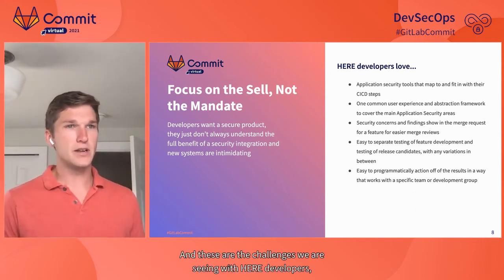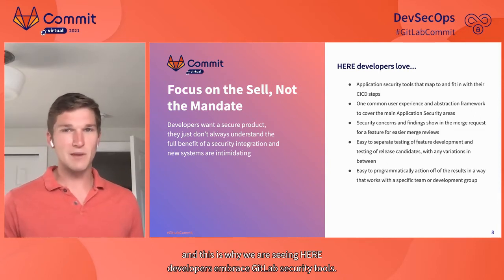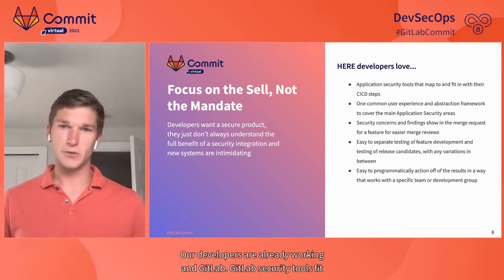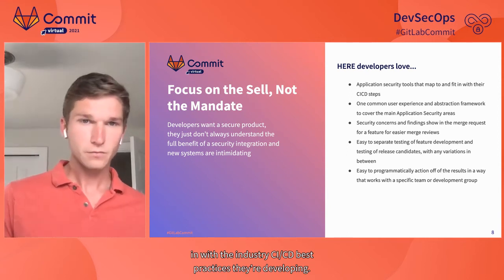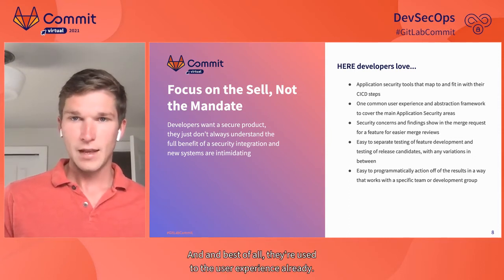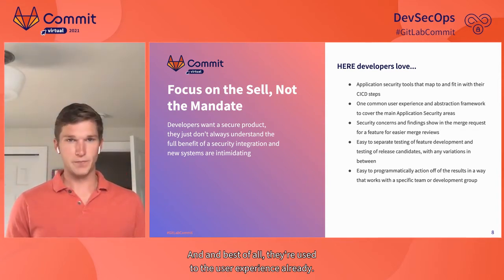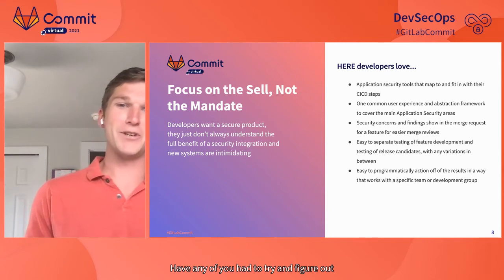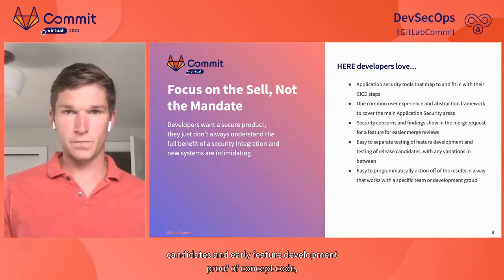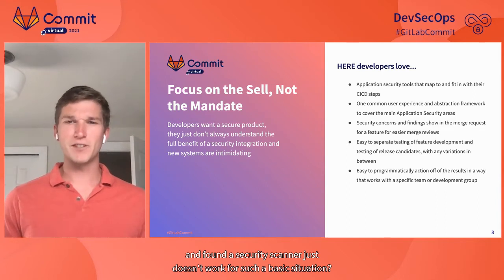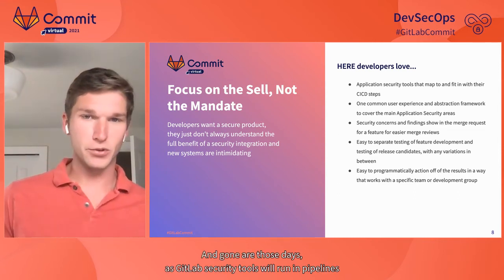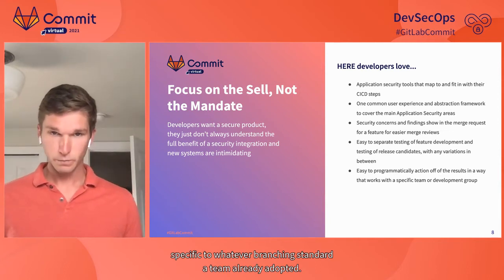These are the challenges we're seeing with Here developers, and this is why we're seeing Here developers embrace GitLab security tools. Our developers are already working in GitLab. GitLab security tools fit in with the industry CI-CD best practices they are developing. Tools are configured using the same YAML syntax that they write their other automation in. And best of all, they're already used to the user experience. Gone are the days of struggling to set up security scanning to differentiate between release candidates and early feature development — GitLab security tools run in pipelines specific to whatever branching standard your team has already adopted.